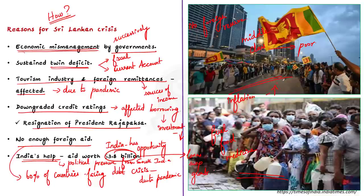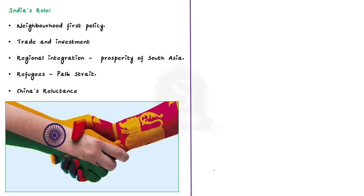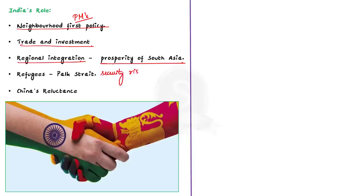Why is India actively helping Sri Lanka? Stabilizing Sri Lanka's economy will be a major win for India's neighborhood first policy. Once the Sri Lankan economy stabilizes, India can deepen its trade and investment linkages with Sri Lanka, resulting in regional integration and prosperity of South Asia. On the other hand, an unstable Sri Lankan economy could pose security risks to India, as it may lead to a flood of refugees coming to India via Palk Strait. India already has a lot of refugee crises and cannot afford another one. Due to all these reasons, India is trying to bail out Sri Lanka.